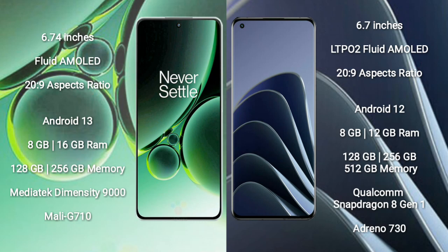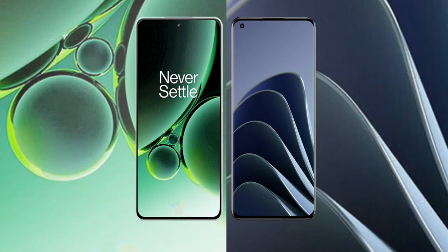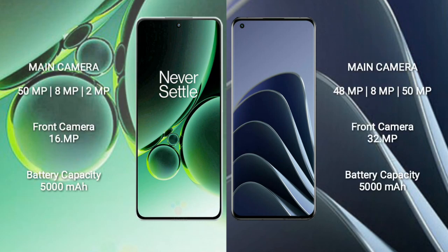OnePlus 10 Pro runs on Android 12 and comes with 8GB, 12GB, or 16GB RAM and 128GB, 256GB, or 512GB internal storage, powered by the Qualcomm Snapdragon 8 Gen 1 processor with Adreno 730 GPU.